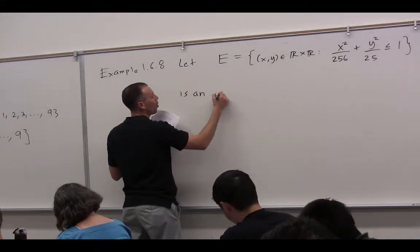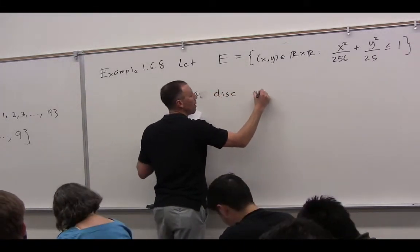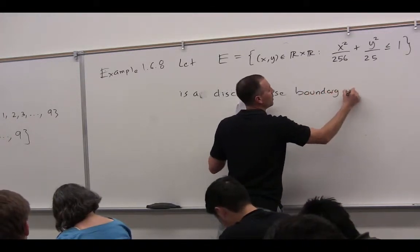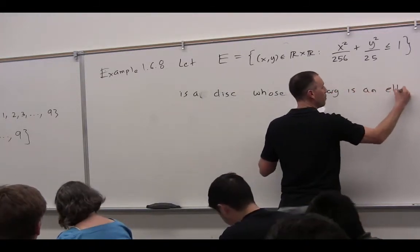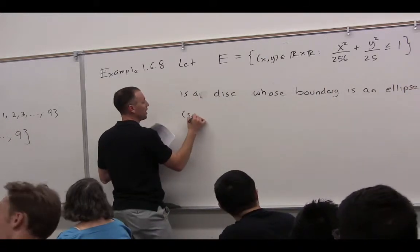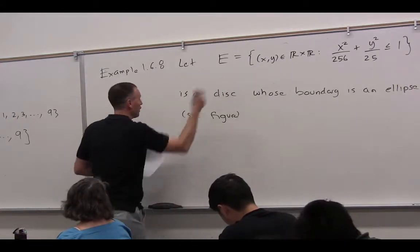It's actually a disk whose boundary is an ellipse. And then we'll say, let's say C figure. And that's not my figure. It's the figure that we're about to draw, right?